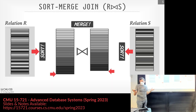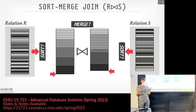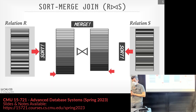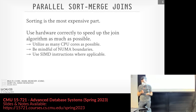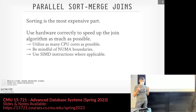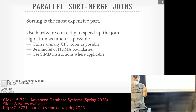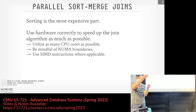We talked about sort-merge joins in intro database courses, but we didn't spend time on NUMA regions or vectorization. This lecture is about how to consider those design decisions for the best performance on a modern CPU. In a parallel sort-merge join, sorting is always the most expensive part. We speed it up through parallelization — executing across multiple threads, using vectorized instructions — and then the merge phase involves deciding output placement and comparison locality within NUMA regions.